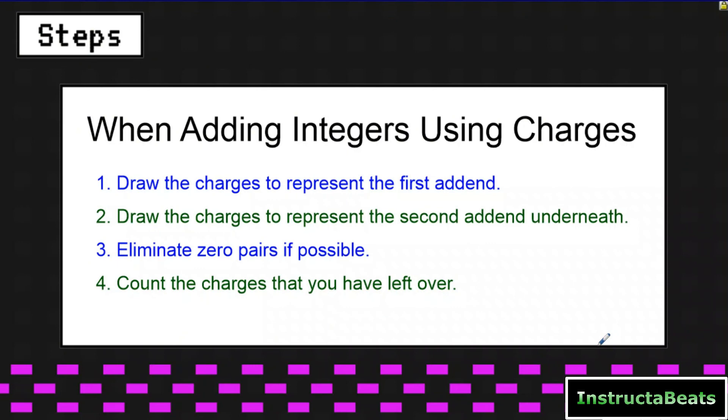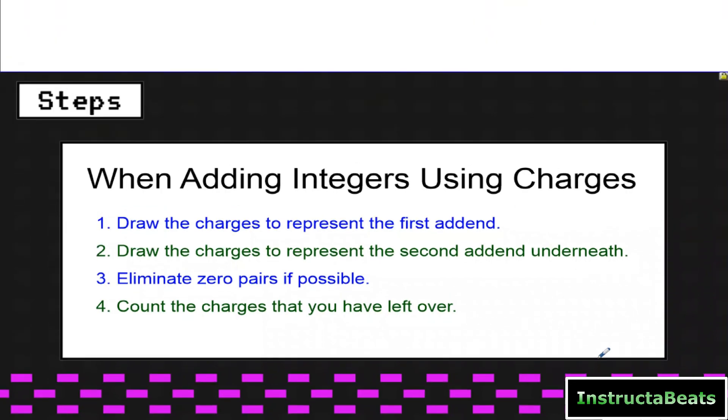When adding integers using charges or counters, here are the steps: Number one, draw the charges to represent the first addend. Number two, draw the charges to represent the second addend underneath, so they're lined up vertically. Number three, eliminate any zero pairs if possible. Step four, after eliminating those zero pairs, count the charges you have left over.